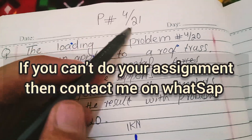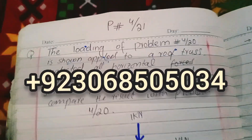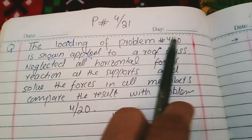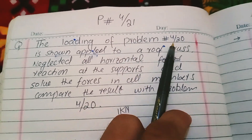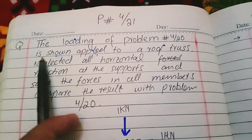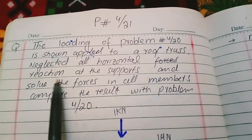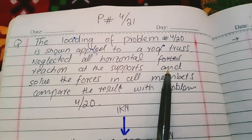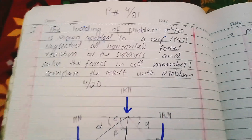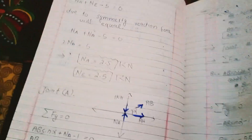Hello dear students, this is problem number 21 of chapter 4 of Engineering Mechanics Statics, 9th edition. In this problem, the loading of problem 4-20 is shown applied to a roof truss. We neglect horizontal reaction forces at the support and solve the forces in all members, then compare with the result of problem number 20.